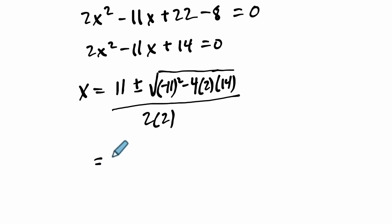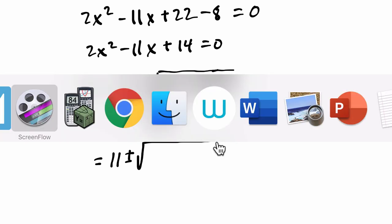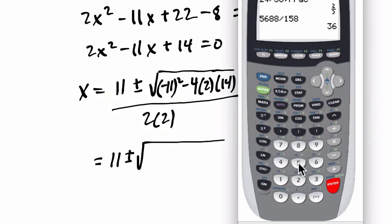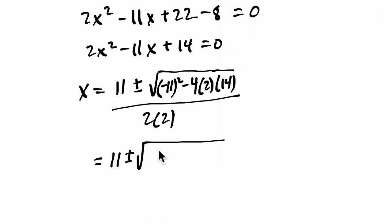All right, what does that get us? Well, 11 plus or minus the square root. Let's simplify the discriminant together. So we get 121, that's 11 squared, minus 4 times 2 times 14. Okay, 9.